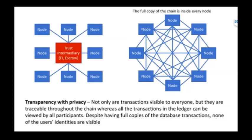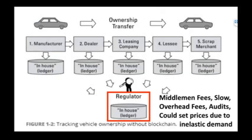In the old system, we have a manufacturer, a dealer, a leasing company, and then scrap. Every time there's a step, there's an in-house ledger. It includes middleman fees, it's slow, it has overhead fees, there are audits to be completed, and they can set prices to whatever they want.